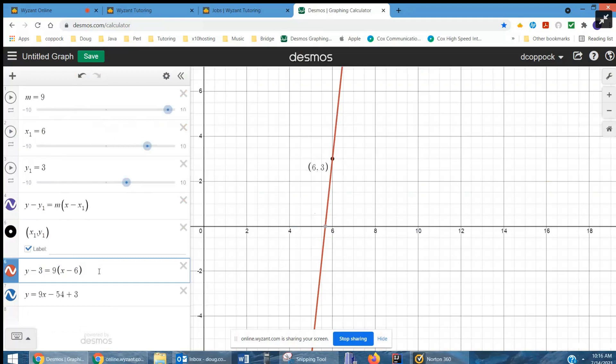And if I want to put it in slope-intercept form, I'll distribute that 9 and then add 3 to both sides. And in the end, this will just become a negative 51.